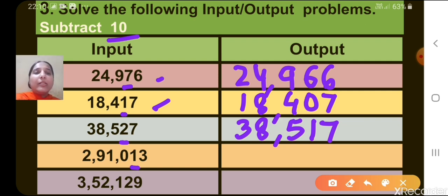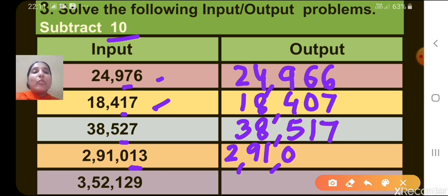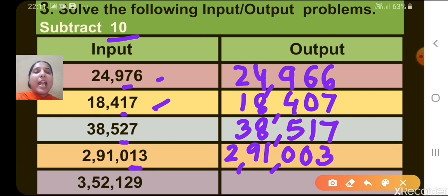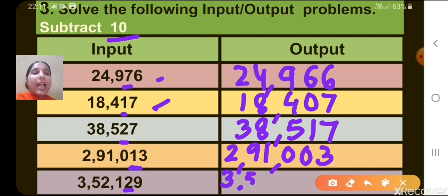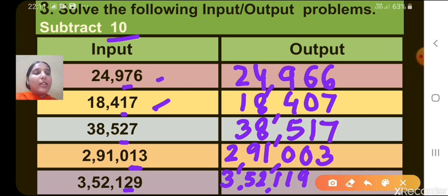The next number — the digit at the 10's place is 1, and the number is 2,91,013. So 1 minus 1 gives 0, and the output is 2,91,003. The next number is 3,52,129. The digit at the 10's place is 2. We subtract 1 from it, so 2 minus 1 gives 1, and the output is 3,52,119.